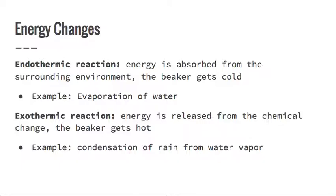There are a couple of types of energy changes that you can see in a chemical reaction. You can have an endothermic reaction where energy is absorbed from the environment. In this case, the beaker or the container would get cold or colder as a result of the reaction. An example of this would be the evaporation of water.